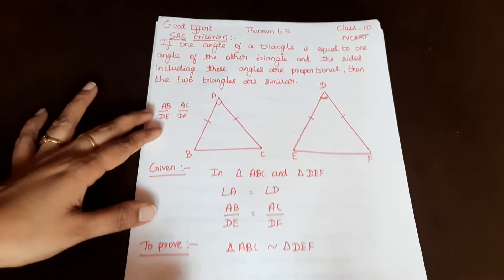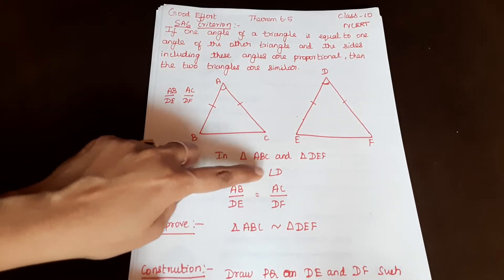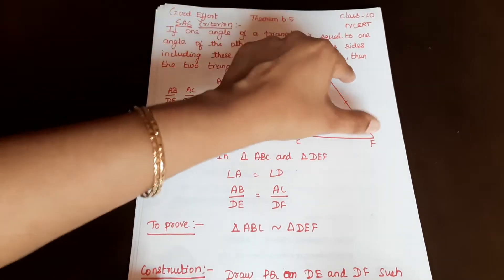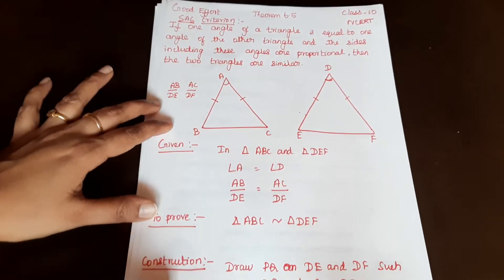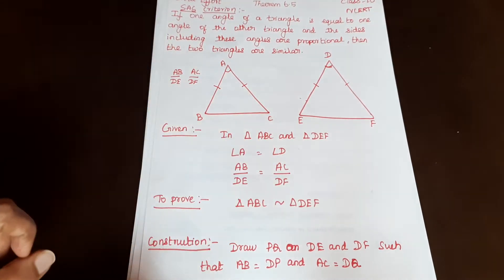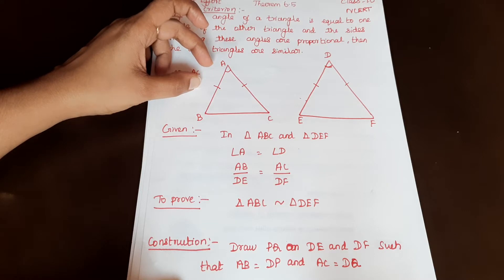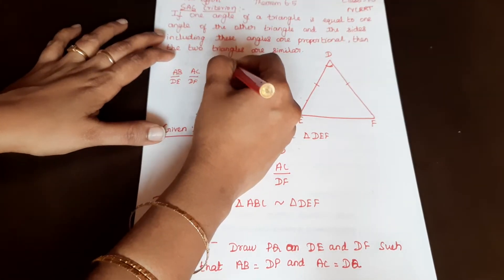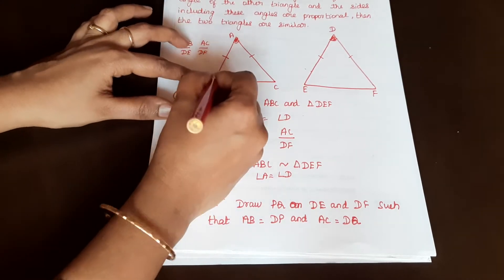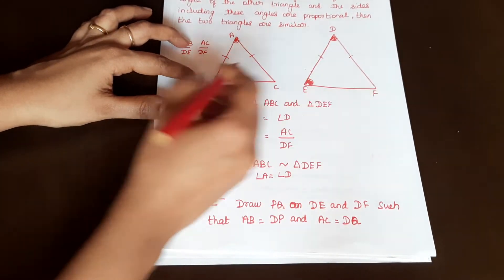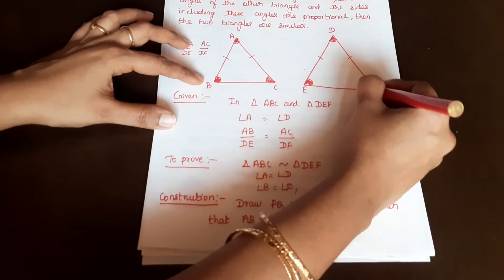We will prove that the SAS criterion gives triangle ABC similar to triangle DEF. The corresponding angles are equal: angle A is equal to angle D, angle B is equal to angle E.